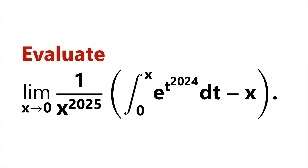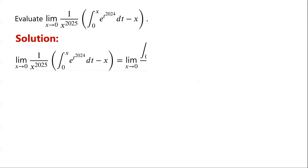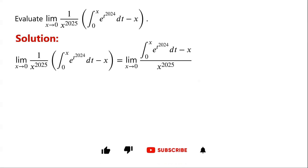Calculate the limit. The limit contains an integral, and it can be written as: the limit of the integral of e to the power of t to the power of 2024, dt, from 0 to x, minus x, over x to the power of 2025, as x tends to 0.